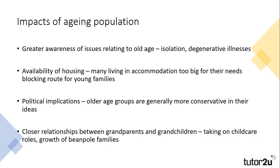The ageing population also has political implications, with those over the age of 65 having a larger say politically as they represent a large section of the population. This can generate some issues as older people tend to be more conservative in their views and less likely to vote for structural changes to society. A final impact is the closer relationships between grandparents and their grandchildren, with many grandparents providing childcare support. There has also been a growth in beanpole families, with elder family members moving in with their children to provide both care and financial support.